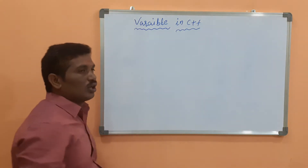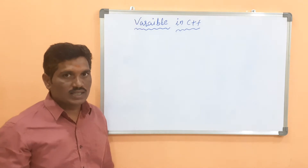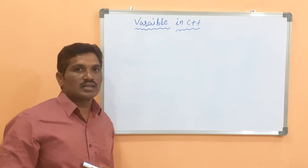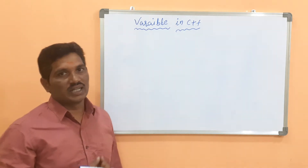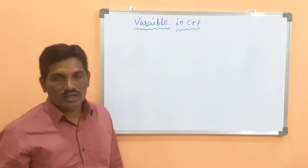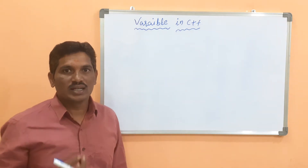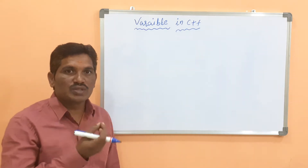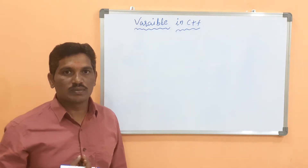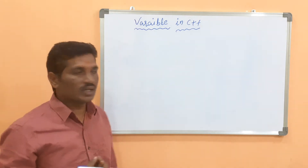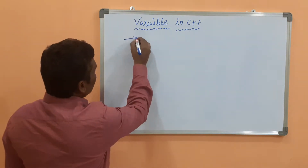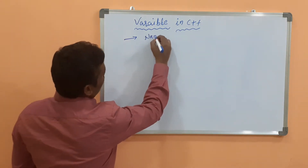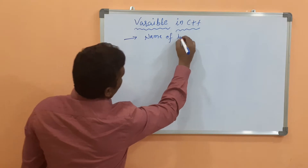Then what is a variable? If you ask that question to students, they will tell you the answer: a variable is used to store a data value. That is correct. The use of the variable is to store data. But what is a variable? Why should we use a variable in our programming concept? Simply, the variable is nothing but the name of the memory location.